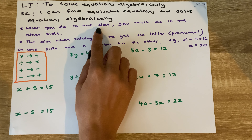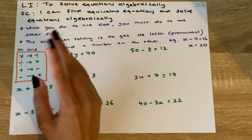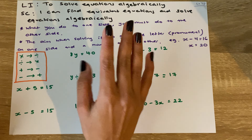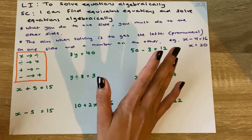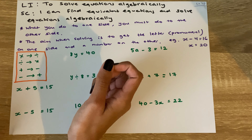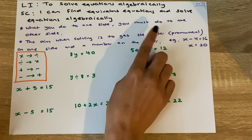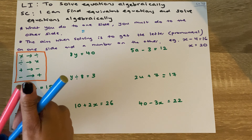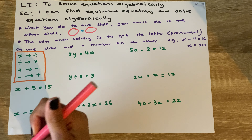In algebra we've got plus signs, minus signs, times signs, divide signs, numbers and letters — all combined together. What we really need to focus on in algebra, especially when solving algebraic equations, is that what we do on one side, we must always do to the other side. What happens on one side of the equal sign always has to happen on the other side.